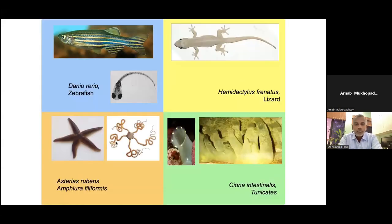Before getting into my talk, I would like to introduce my model animals. The first is Danio rerio, the zebrafish — most widely used all across the globe for research purposes like developmental biology, neuroscience, aging, and so on. We also use the lizard gecko as another alternate model for understanding regeneration. And through collaboration, we use marine models like ascidians and echinoderms to understand arm regeneration.